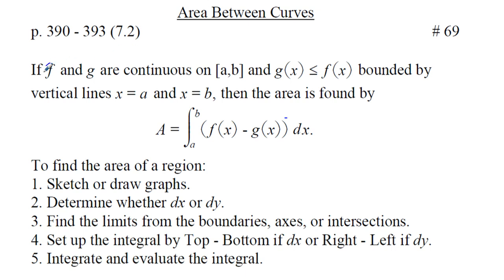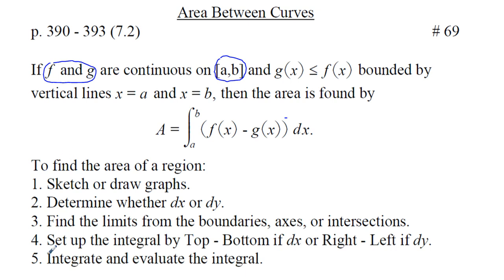If functions f and g are continuous on the closed interval from a to b, and g of x is less than or equal to f of x, bounded by vertical lines x equals a and x equals b, then the area is found by this integral here: the integral from a to b of f of x minus g of x, dx.